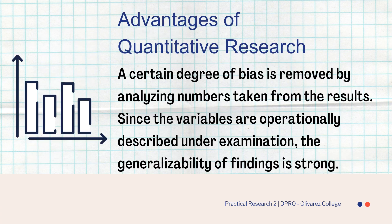A quantitative research study's overarching objective is to classify features, count them, and build statistical models to explain the observable phenomena. This methodology is used especially in studies of the social sciences, which typically analyze abstract variables. One of the advantages of quantitative research is that a certain degree of bias is removed by analyzing numbers. Since the variables are operationally described, the generalizability of findings is strong, meaning the quantitative method is applicable to a broader population.